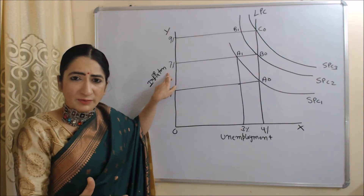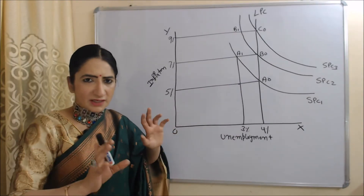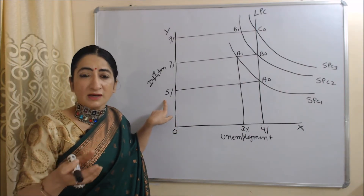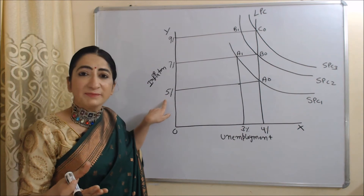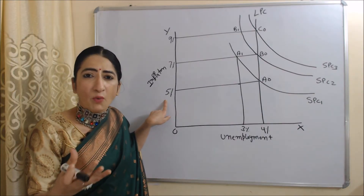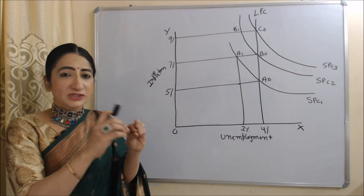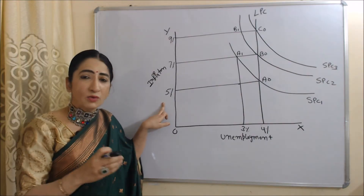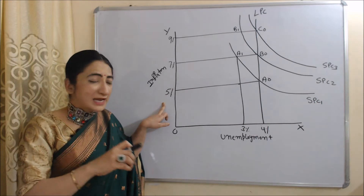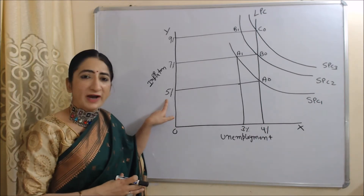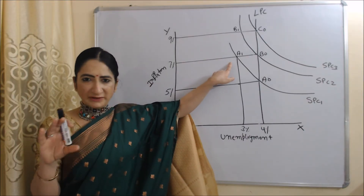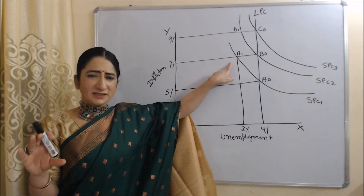The producer is selling goods at 7% inflation, earning more and more profit, and hiring more employees, so unemployment is reducing. But employees are at a loss because they are receiving a wage rate based on 5% inflation and are not demanding a higher wage rate. Because of adaptive expectation, in the short time period employees are not able to realize that inflation has increased and their real wage rate has fallen.